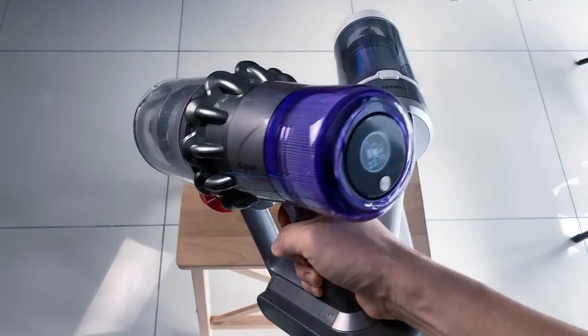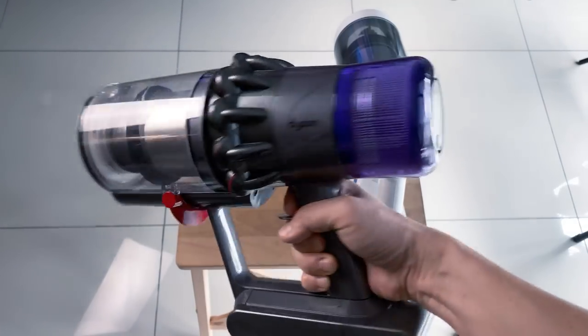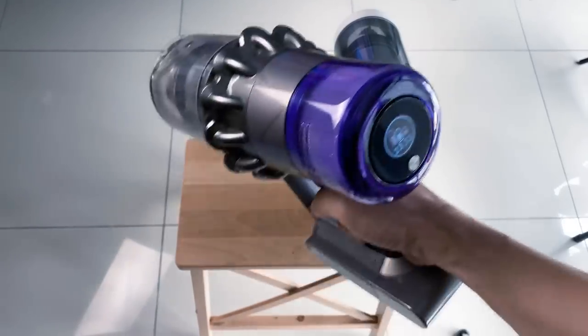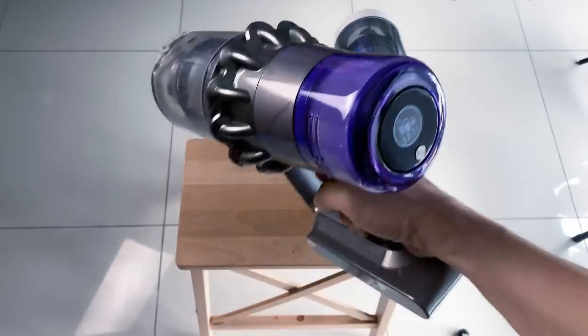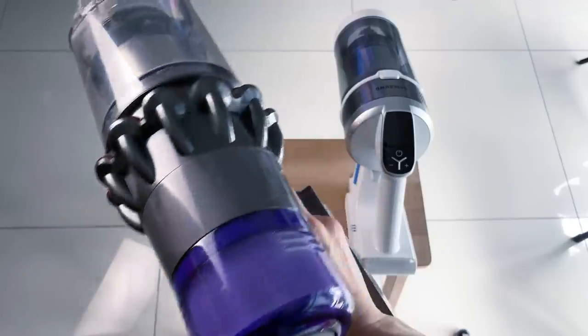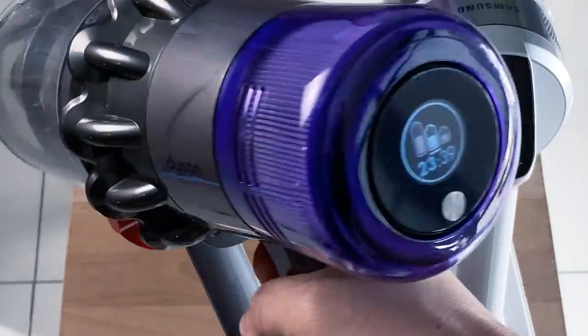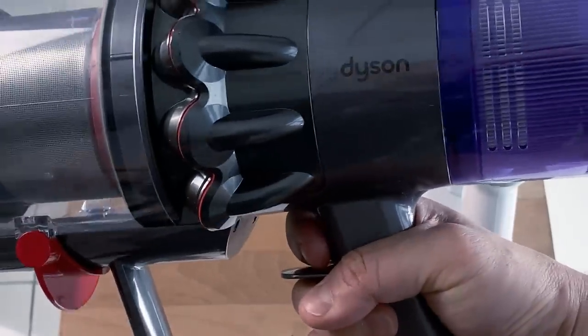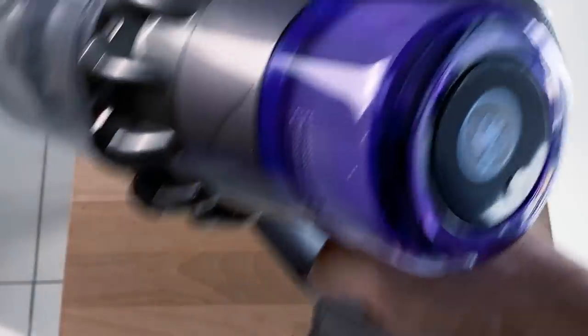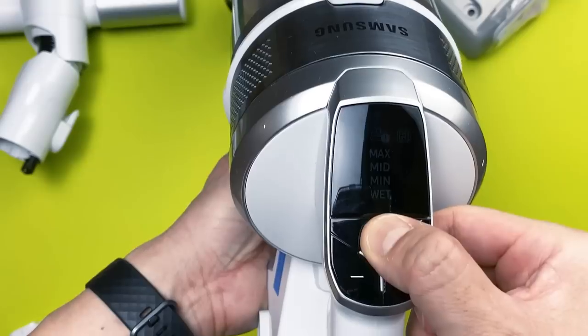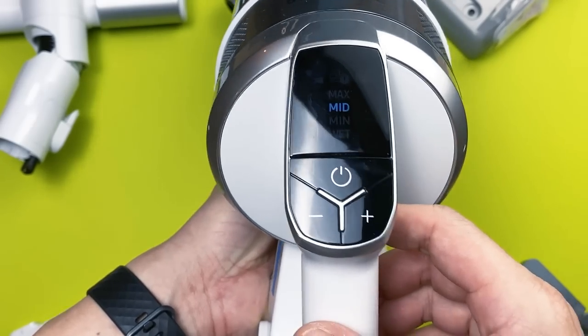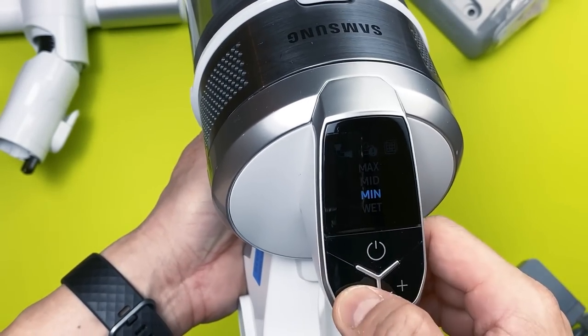They both operate differently, with the Dyson using a trigger mechanism, while the Samsung uses a one-click type approach. Both have distinct advantages and disadvantages. Dyson's trigger type approach is more energy efficient, as you simply lift off your finger when you're not vacuuming. However, it may cause fatigue since your index finger needs to be on the trigger throughout the operation. Meanwhile, the Samsung is convenient with just a press of a button, but continues to operate until you turn it off.